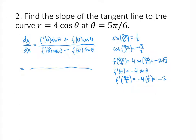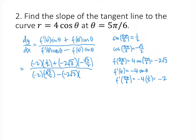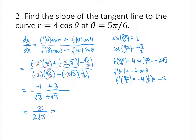Let's plug all this stuff in. f prime of theta is negative 2, sine of theta is 1/2, f of theta is negative 2 times square root of 3, cosine of theta is minus square root of 3 over 2. On the bottom, f prime is negative 2, cosine of theta is minus square root of 3 over 2, and then minus f of theta which is minus 2 radical 3, times sine of theta which is 1/2. We can do some simplification — the 2's cancel throughout. On the top we end up with negative 1, and then minus square root of 3 times minus square root of 3 is plus 3. On the bottom we have positive square root of 3 plus positive square root of 3. So we just have 2 divided by 2 times square root of 3. Dividing out the 2's gives us 1 over square root of 3, and that's the slope of our tangent line.